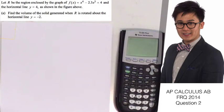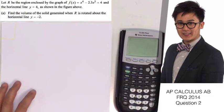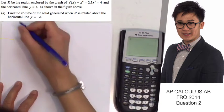Today we're going to be answering the 2014 FRQ question number 2. On this problem, we are given the function f(x) = x⁴ - 2.3x³ + 4, and the horizontal line y = 4.